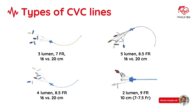Most commonly, 3, 4, and 5 lumen lines are inserted. In patients with cardiogenic shock with an indication for right heart catheterization, we can also choose the 9 French arrow line with a sheath. First of all, confirm what the line will be used for and how many infusions the patient is going to have, as this will help you select the line with the correct number of lumens.